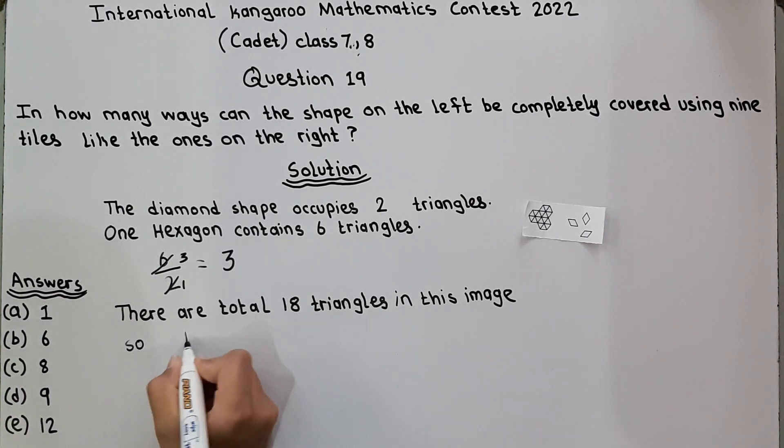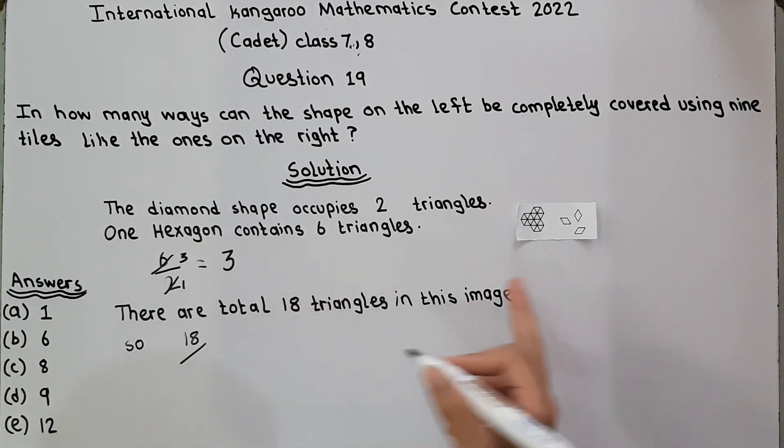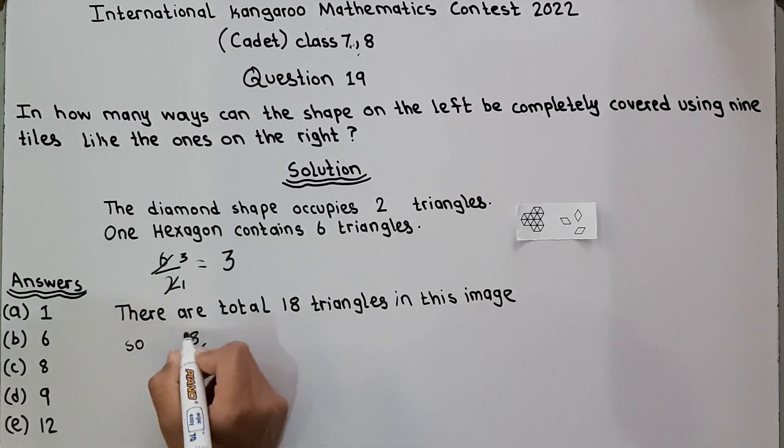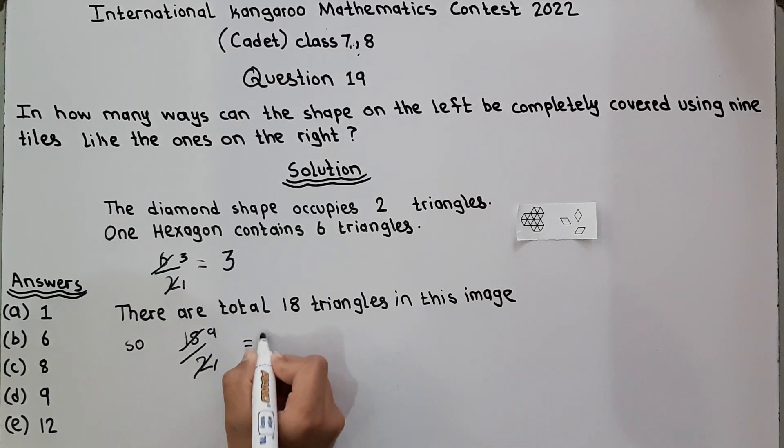So 18 divided by the diamond shape - this diamond shape occupies two triangles - so 18 divided by 2. Two ones are 2, and 2 nines are 18, equal to 9. So there are nine ways the shape can be completely covered, and 9 is the answer.